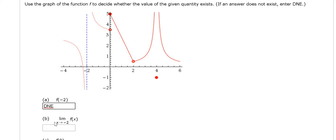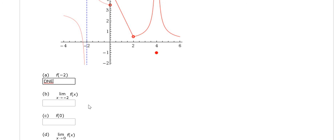Part b wants the limit as x approaches negative 2. When we approach negative 2, in order to compute this limit, what we'll do is approach from the left and from the right. If we get the same answer, that's the answer. If we get different answers, it's DNE.